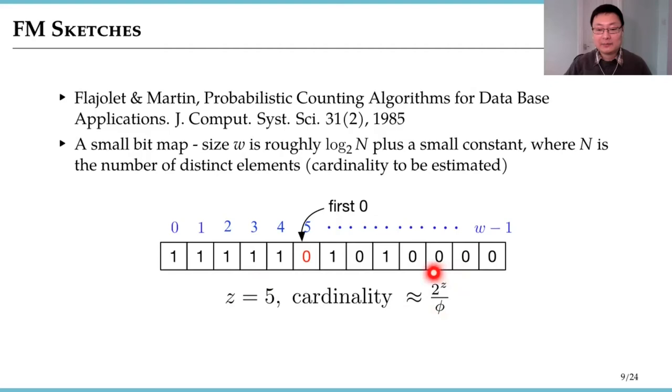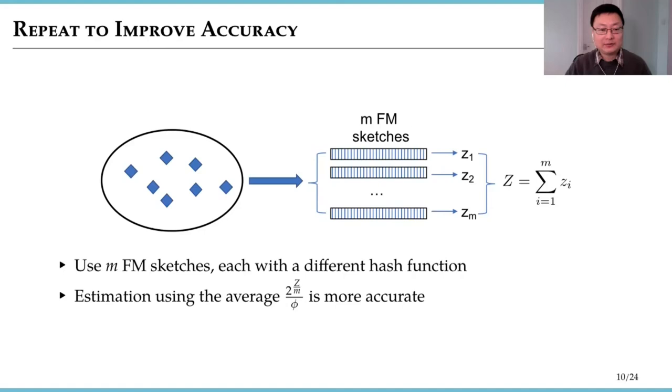If we just use one FM sketch to estimate, then the estimation accuracy is not good. What we do in practice is we build multiple FM sketches in parallel, each using a different hash function. Then we can extract multiple Z values and then we use the sum or more precisely the average to estimate the cardinality, which gives us a more accurate result.